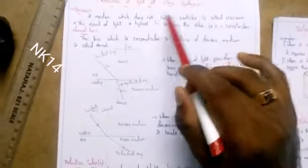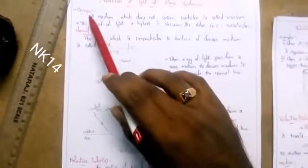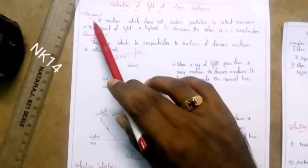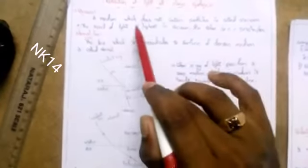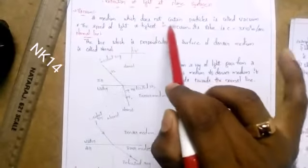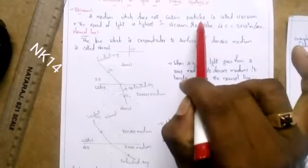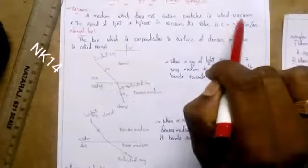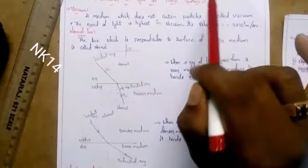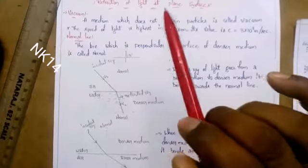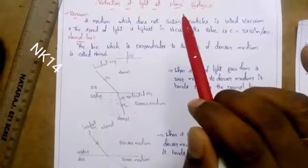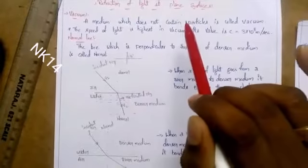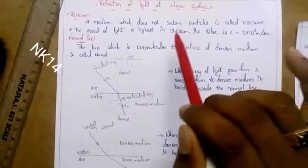First, let's discuss vacuum. A medium which does not contain particles is called vacuum. From this we can understand that vacuum is a place or medium where there are no particles.